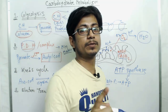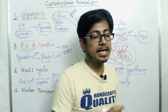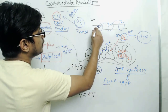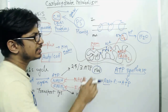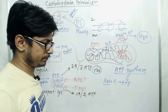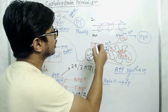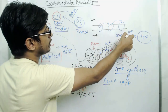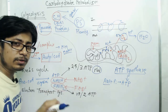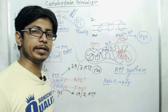The electron transport chain is one part of the story — electrons are transported and received by oxygen at the end. But the question is: how is ATP generated?